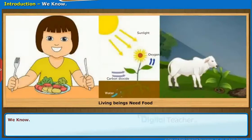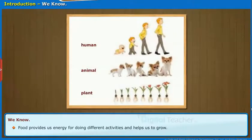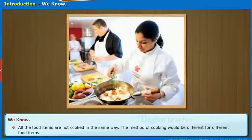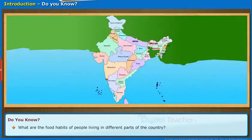Now, let us start our chapter with the introduction. In previous classes, we learned that all living beings need food. Food provides us energy for doing different activities and helps us to grow. The food we eat is obtained from plants and animals. All the food items are not cooked in the same way; the method of cooking would be different for different food items. Leafy and non-leafy vegetables should be washed thoroughly before cooking. Do you know what are the food habits of people living in different parts of the country?